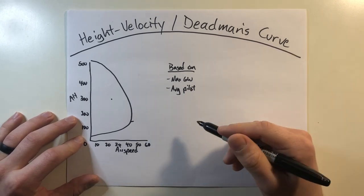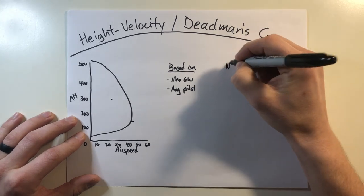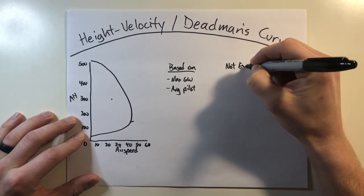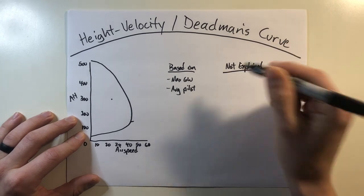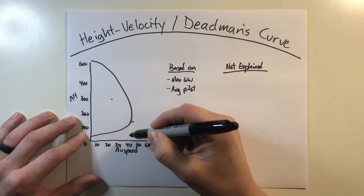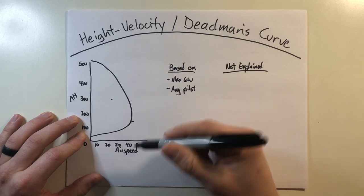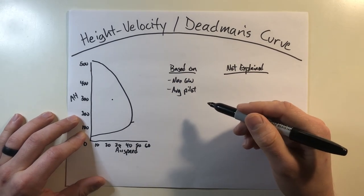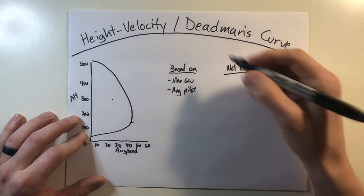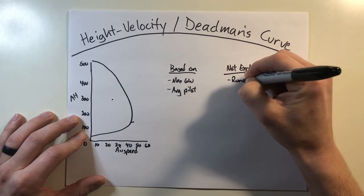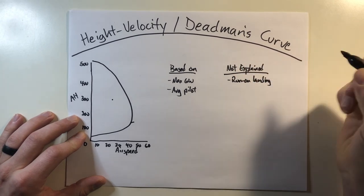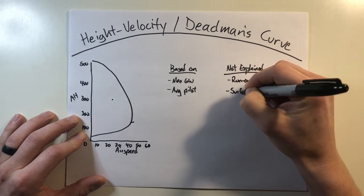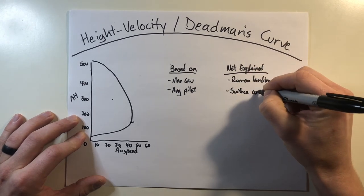Alright, so moving on to what the chart doesn't show you, or what is not explained. Now, it doesn't really say it in the charts, but all of these height velocity diagrams are tested and verified by the flight engineers who designed this helicopter, and they're all to a run-on landing or a roll-on landing if your aircraft has wheels. That said, if it's a roll-on landing, it has suitable surface conditions.